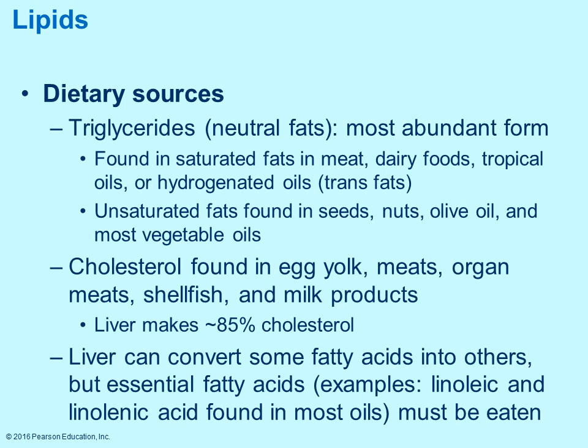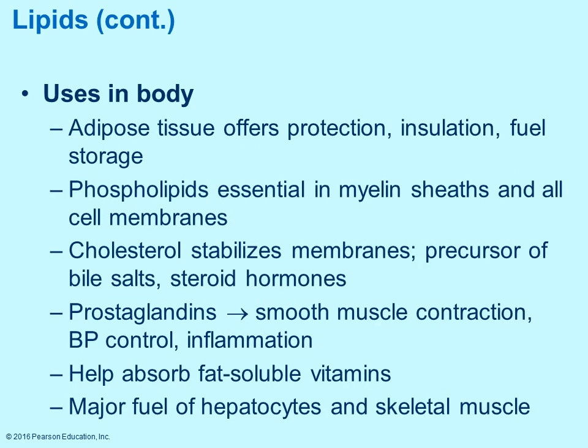Lipids — these are your fats. One of the most common ones are your triglycerides, which can be found in meat, dairy foods, and nuts. Cholesterol is also another type of lipid, found in egg yolk, meats, and various other products; the liver can also make some cholesterol. What are lipids used for? Adipose tissue offers insulation, provides storage for fuel, and adds protection.